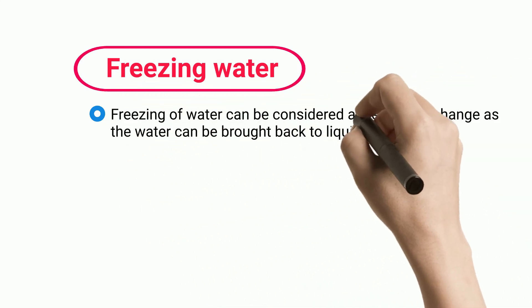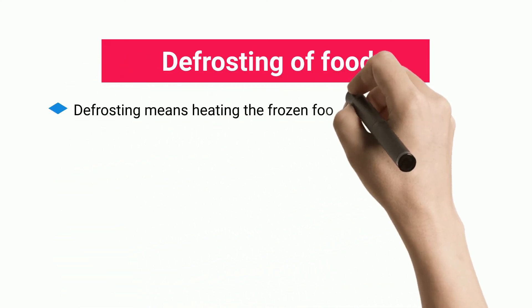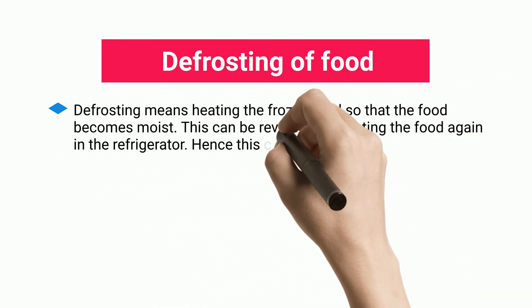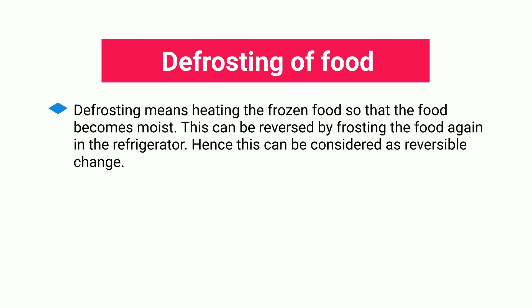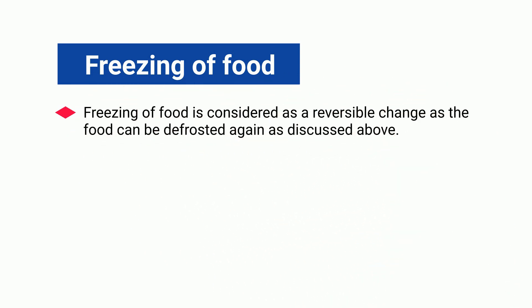Freezing Water: freezing of water can be considered a reversible change as the water can be brought back to liquid state just by keeping it outside the refrigerator for a while. Defrosting of Food: defrosting means heating the frozen food so that the food becomes moist. This can be reversed by frosting the food again in the refrigerator. Hence, this can be considered a reversible change. Freezing of Food: freezing of food is considered a reversible change as the food can be defrosted again as discussed above.